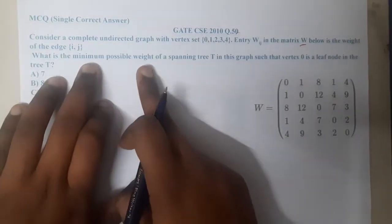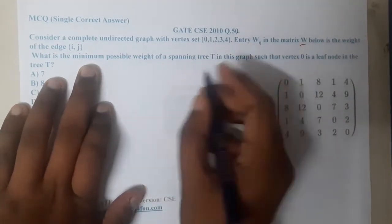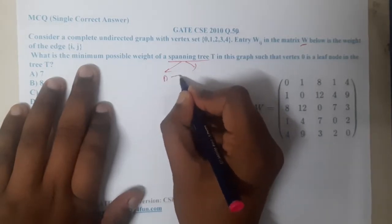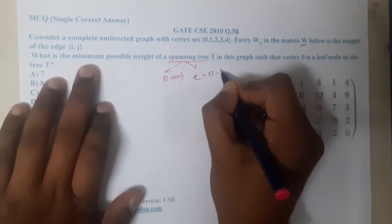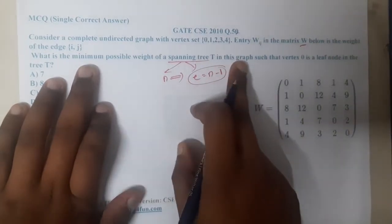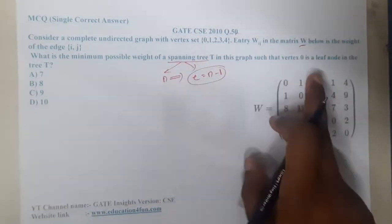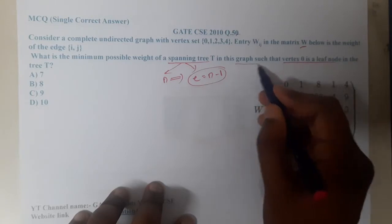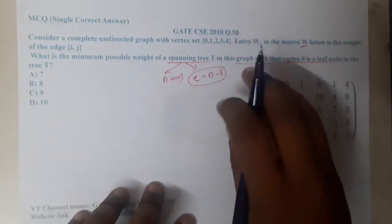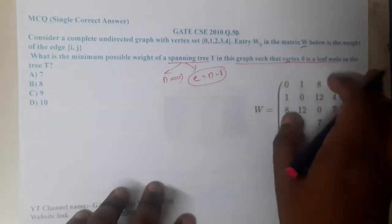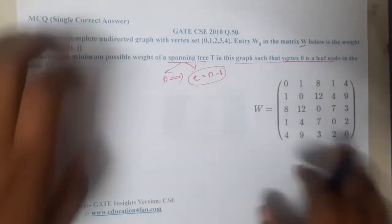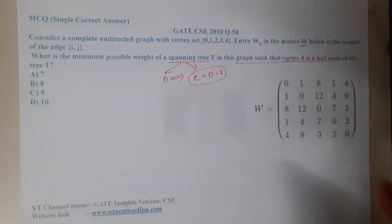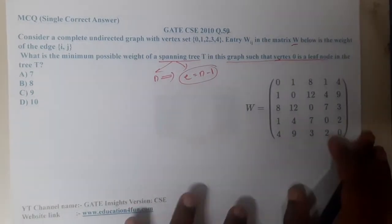The question asks for the minimum possible weight of a spanning tree T. Recall that in a spanning tree with n vertices, the number of edges equals n minus 1. There is an additional condition: vertex 0 must be a leaf in the spanning tree. So we need to ensure vertex 0 is a leaf as we build the tree.